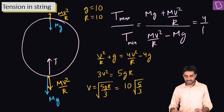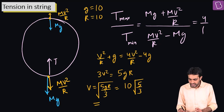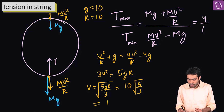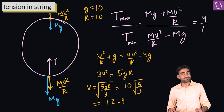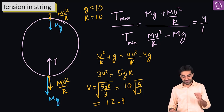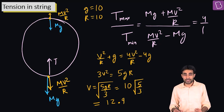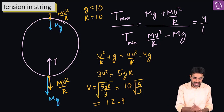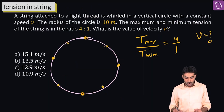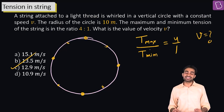10√(5/3) is approximately 12.9 m/s, which is greater than 10. The exact calculation gives approximately 12.9 m/s, and option C — 12.9 m/s — is the correct answer for this question.